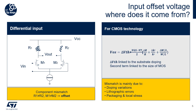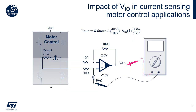Let's now look at how the input offset voltage can impact the theoretical measurement of an application. Shunt current sensors are used in precision current sources for feedback control systems, and also in battery fuel gauging, torque feedback controls in electric power steering, and precision power metering. In this slide, we will look at a motor control application.